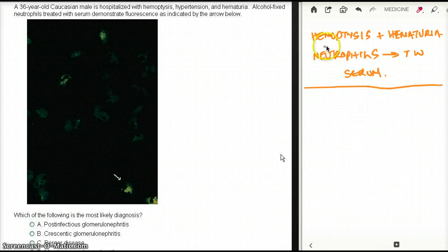So first of all, hemoptysis and hematuria. There was no protein in the urine, so obviously it's going to be nephritic syndrome. Starting from the beginning, we have hemoptysis and hematuria. Which diseases cause hemoptysis and hematuria? There's only two: Goodpasture's and Wegener's.